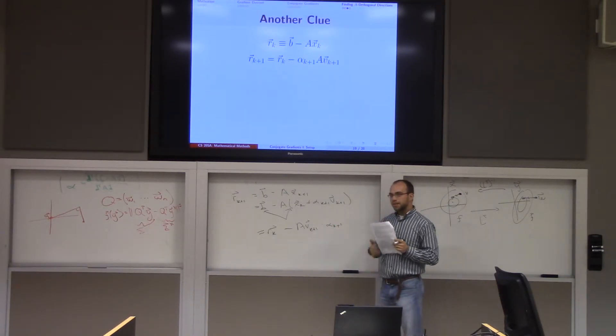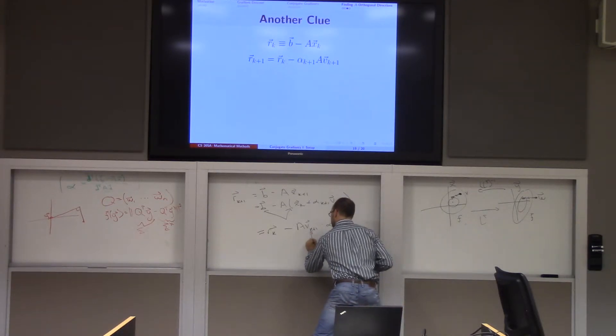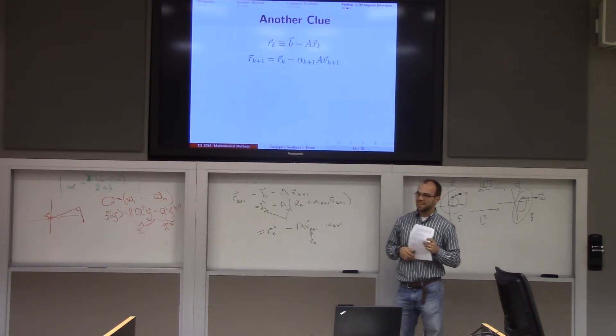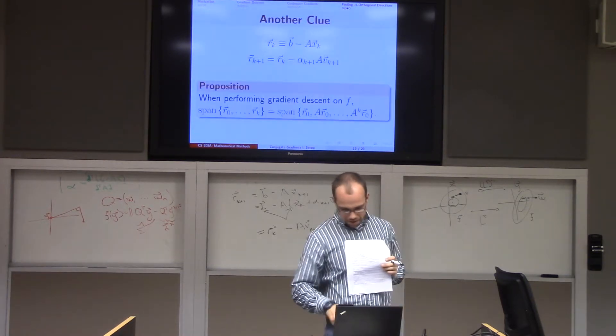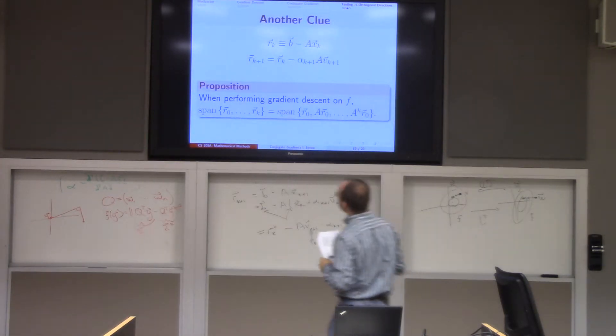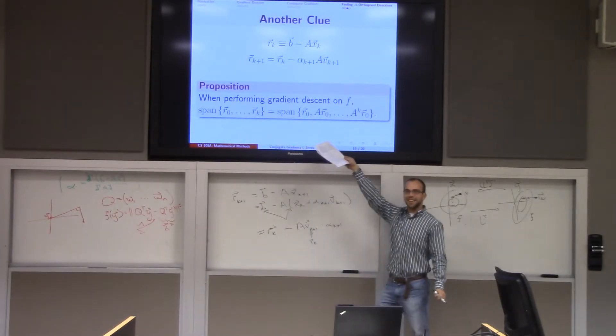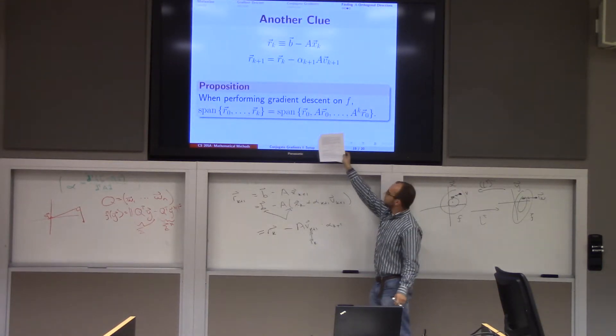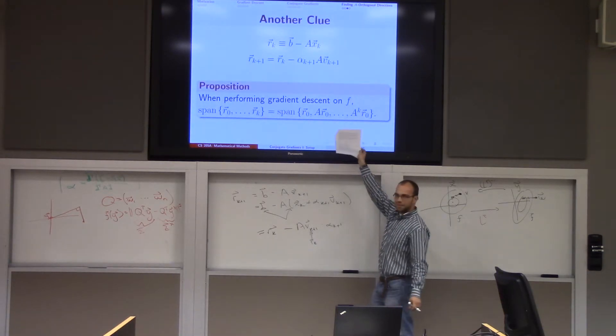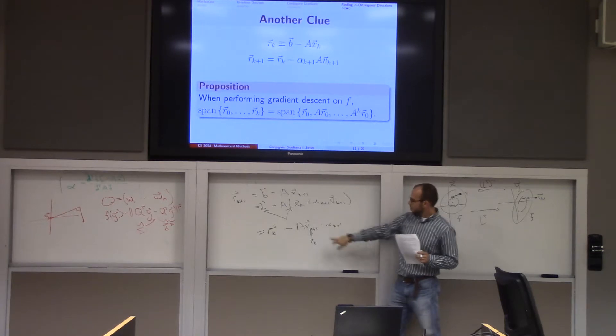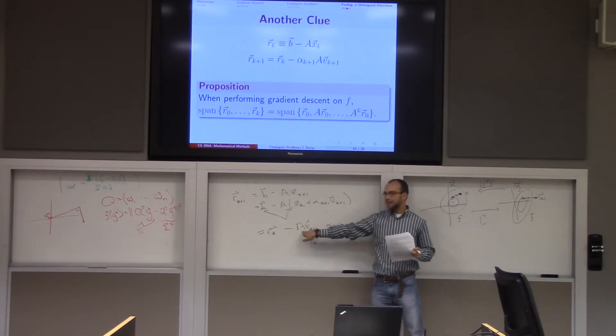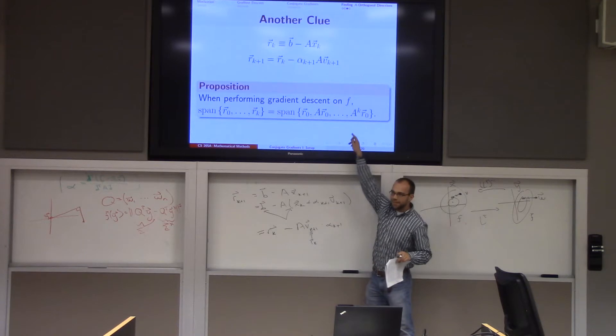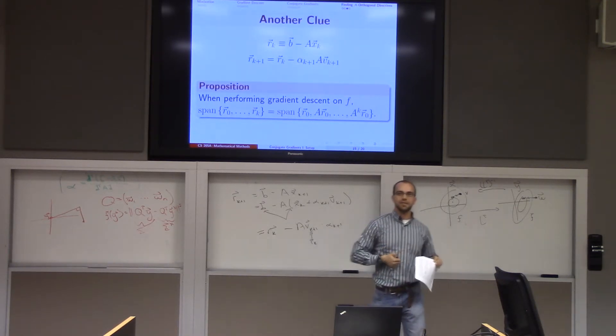Well, this proves a nice formula, which is that the span of the set of residuals from step 0 to step k in gradient descent is equal to the span of the first residual plus a times the first residual plus a squared times the first residual all the way up to a to the k times the first residual. Why is that? Well, look what happened. I took the last residual, and I multiplied it by a, and then I just added it to something. So each time I do this, I incur another a, and so when I undo this formula recursively, I get powers of a.